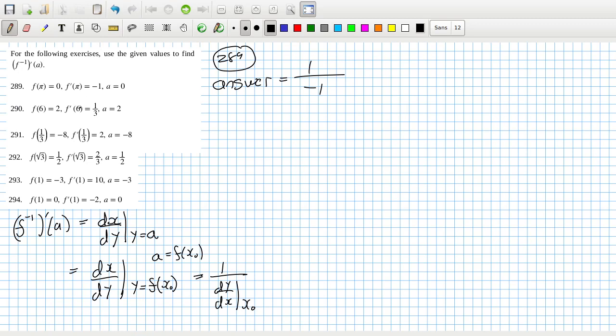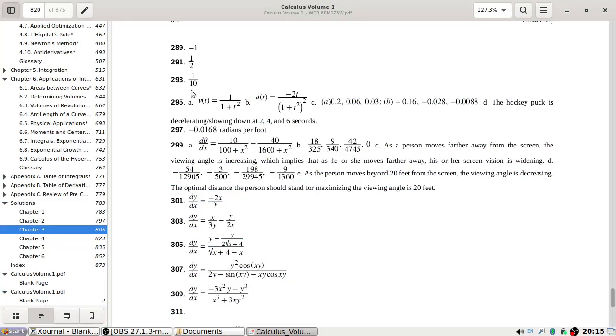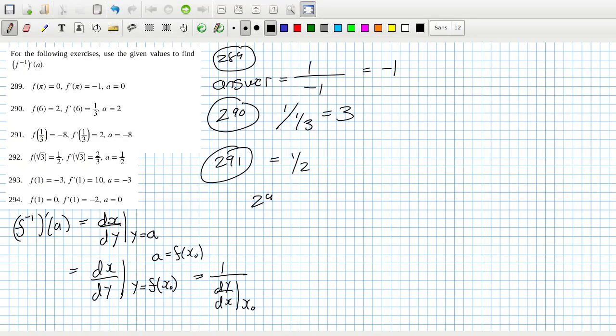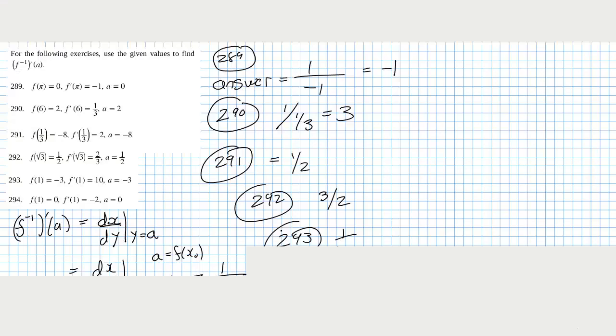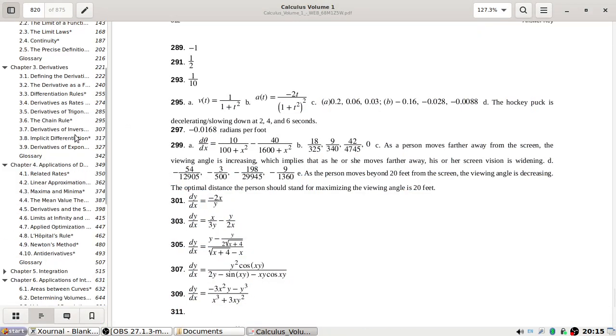It's just in each case it's just going to be one over this, isn't it? Like in 290, it'll be one over one over three, which will be three. And in 291, it'll be one over two. 292, it'll be three over two. And 293, it'll be one over ten. And 294, it'll be minus one over two. Okay, cool, I ain't complaining.